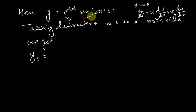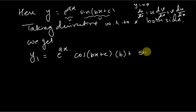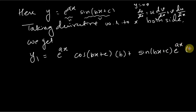Here u = e^(ax) and v = sin(bx + c). Applying the product rule: e^(ax) as is, times the derivative of sin(bx + c) which is cos(bx + c) · b by the chain rule, plus sin(bx + c) as is, times the derivative of e^(ax) which is a·e^(ax). We observe that e^(ax) is common to both terms.